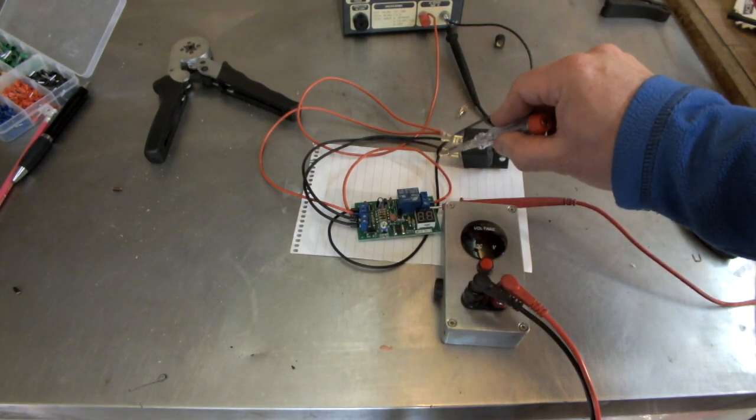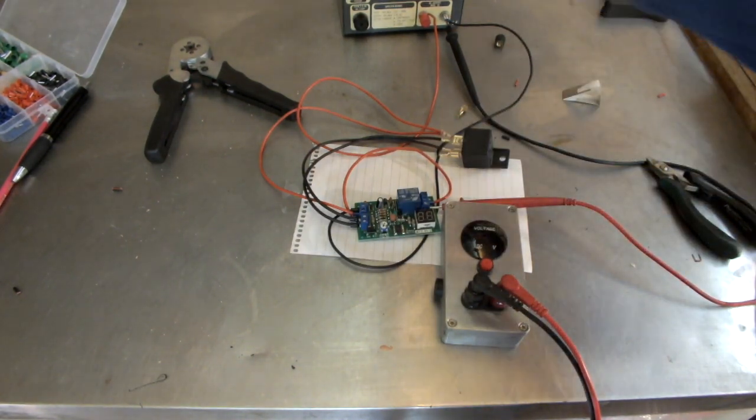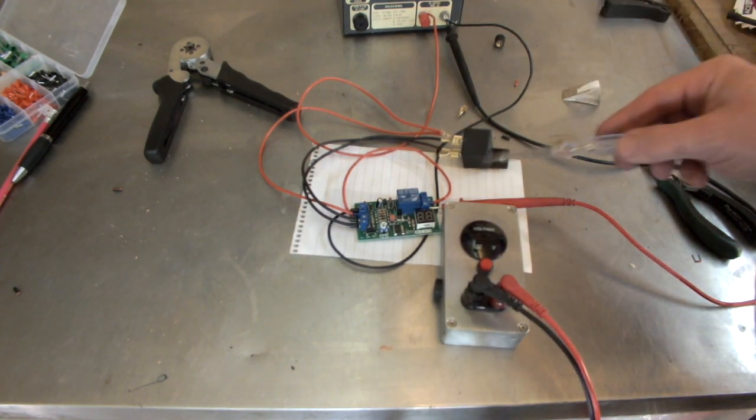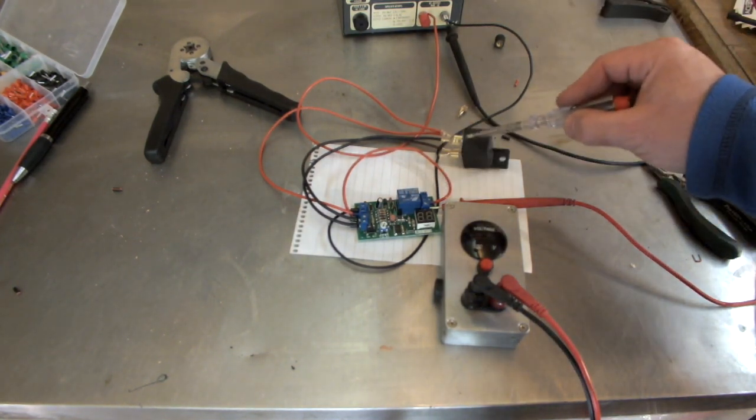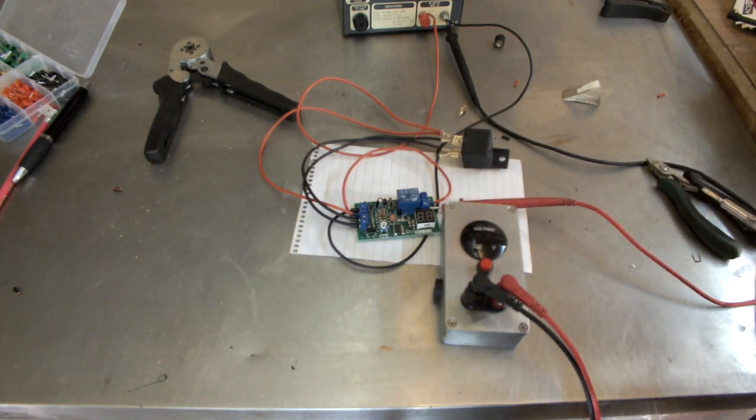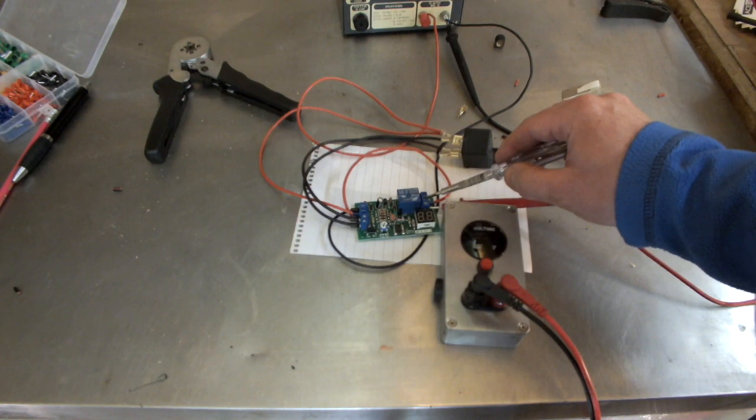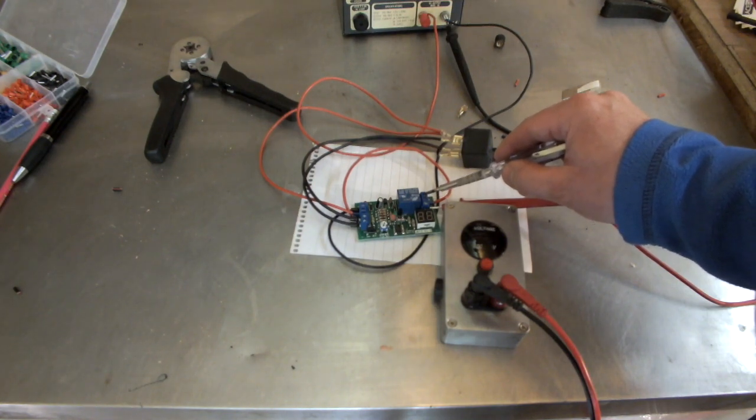Now, this black wire next to it is just a ground. That's a ground back to your battery or a chassis ground. So, it goes from the negative on our circuit board. Negative on our relay. And, it all goes back to our simulated battery.